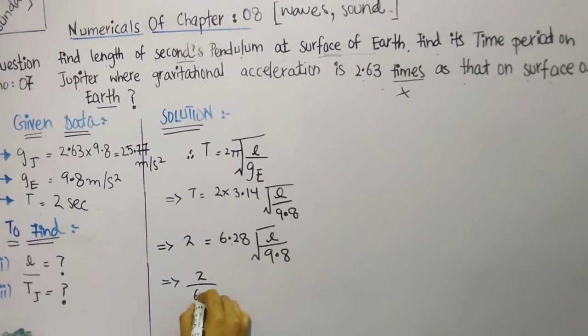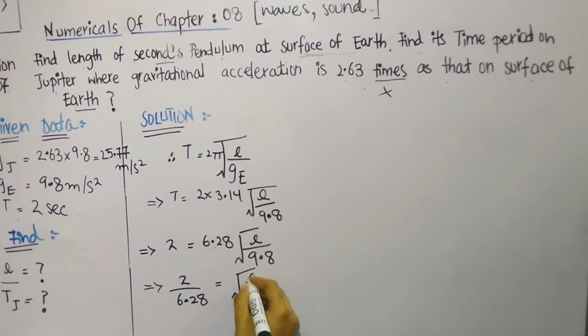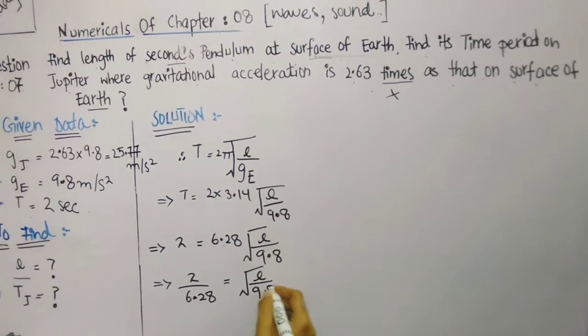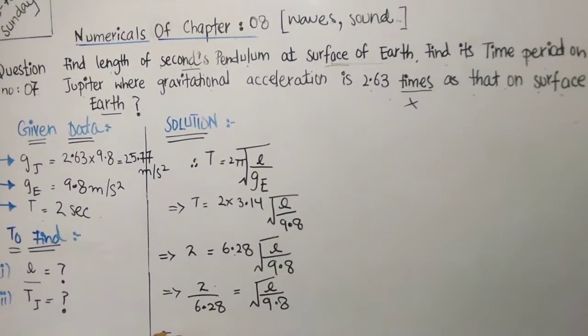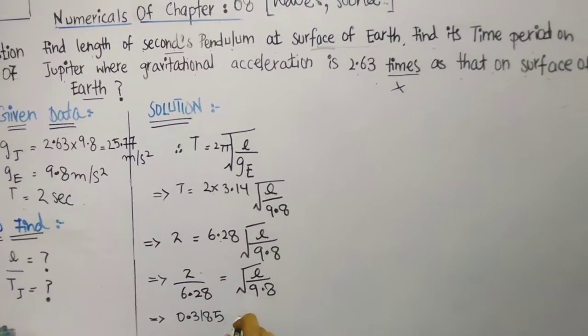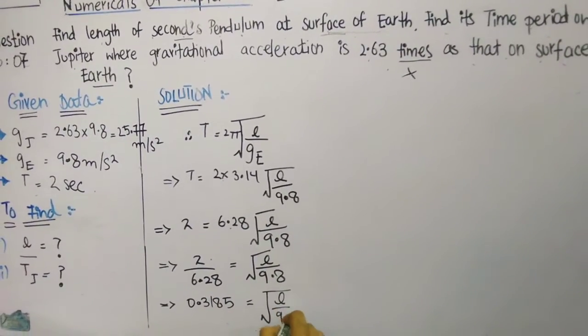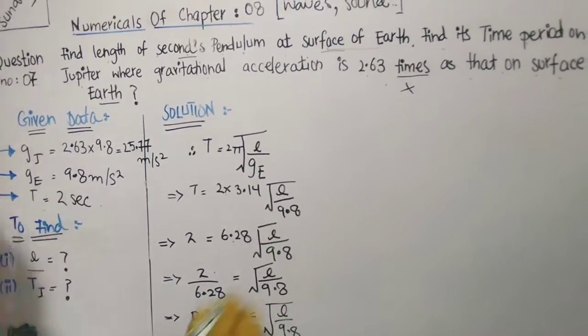2 divided by 6.28 is equal to √(L/9.8). If we are going to divide it then we will get 0.3185, and L upon 9.8 is under root, so if we are going to remove the under root we are well aware that we are going to remove the square.